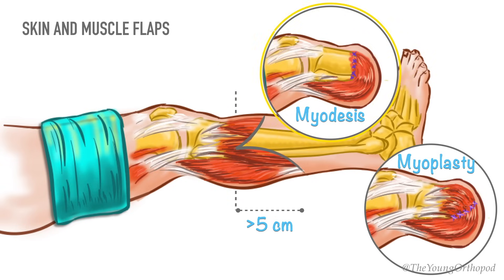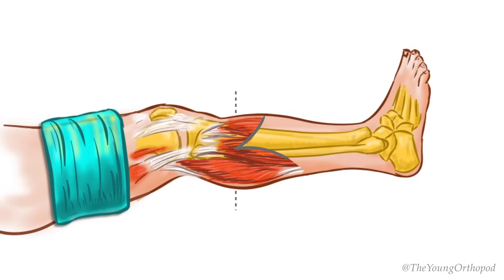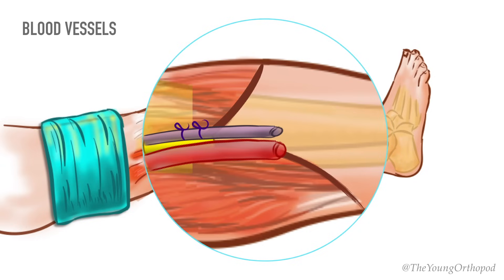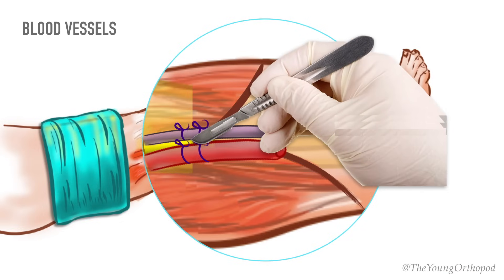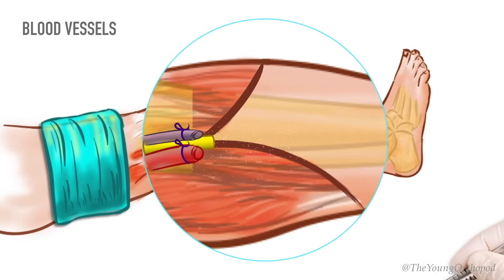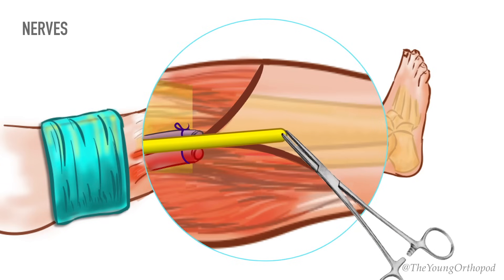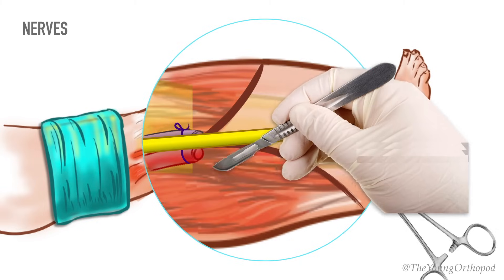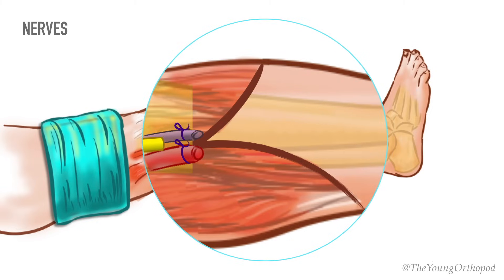Myodesis is the preferred method as it provides stronger insertion, helps maximize strength, and reduces atrophy. Major blood vessels should be isolated and individually ligated. Meticulous haemostasis is desired before closure. Nerves should be isolated, gently pulled out, and sharply divided so that the cut end retracts deep into the soft tissue envelope. Crushing the nerves should be avoided as it may contribute to post-operative pain.